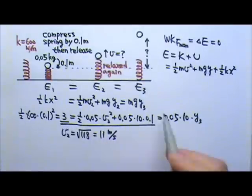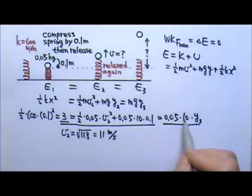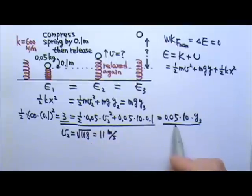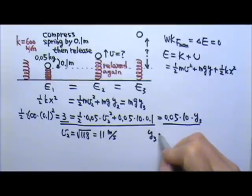And then I can set 3 to equal to that. Of course, you can also set these two to equal each other, but 3 equals to that is easier. And so the y3 will be 6 meters.